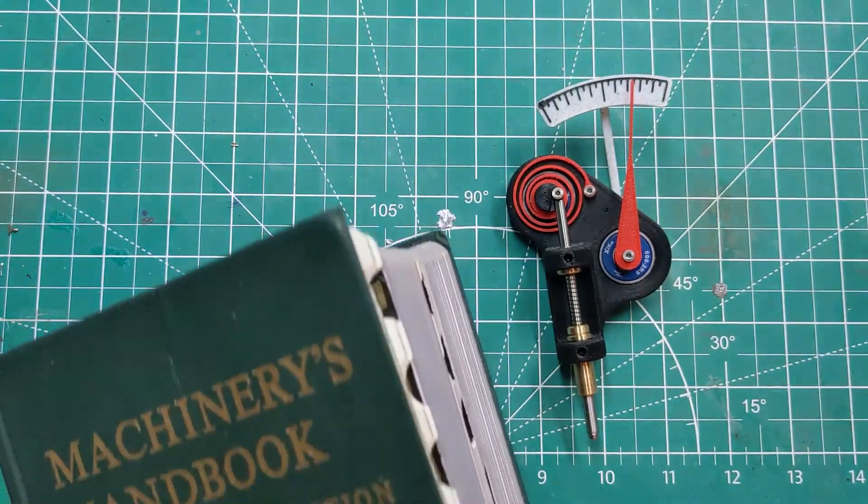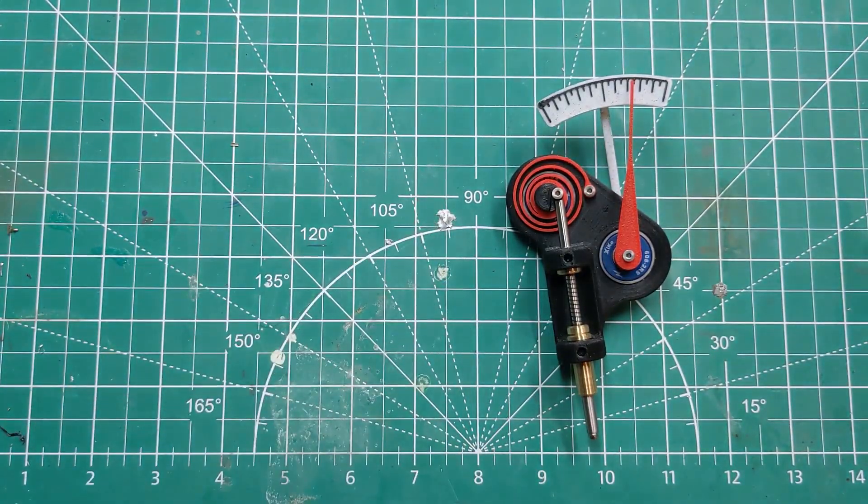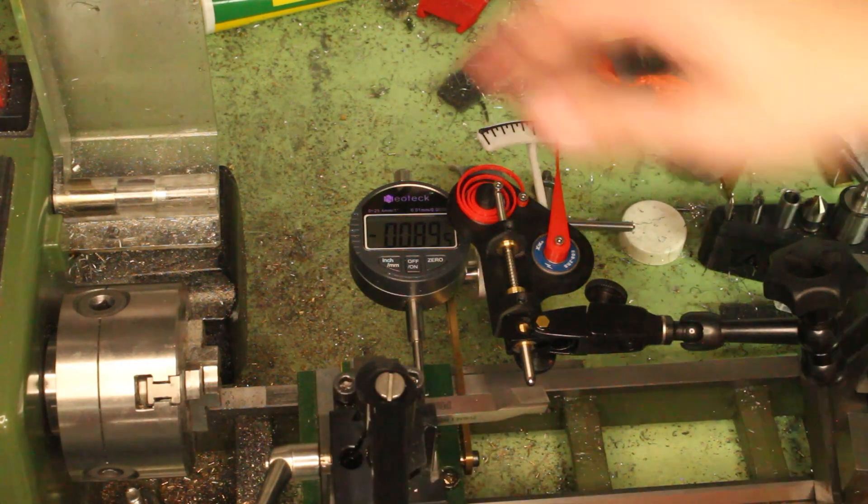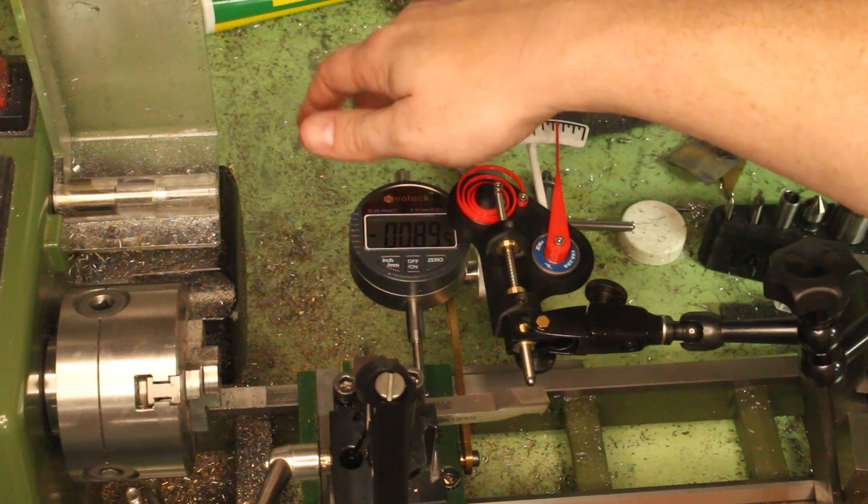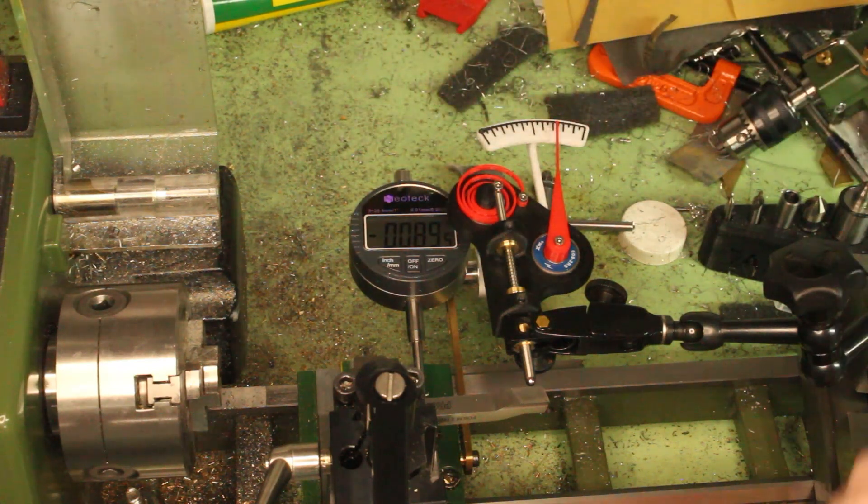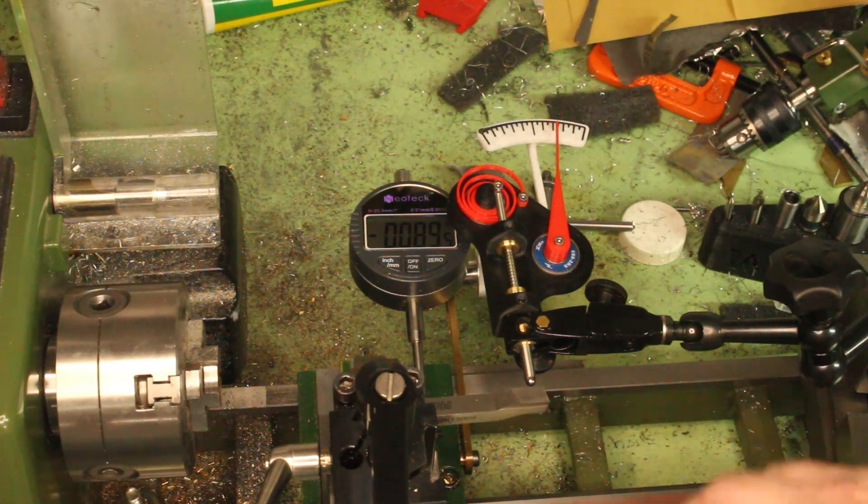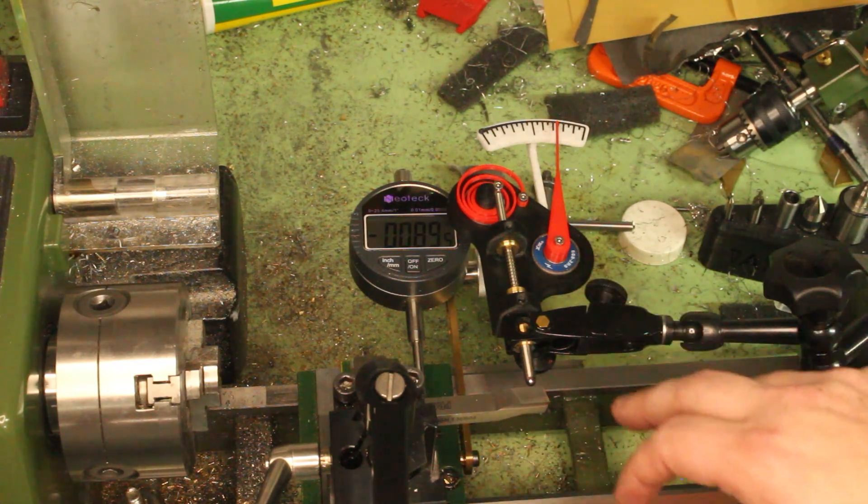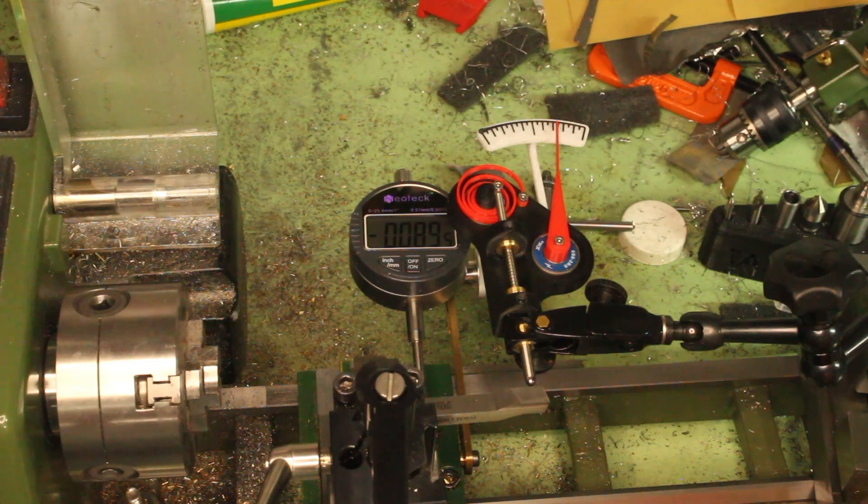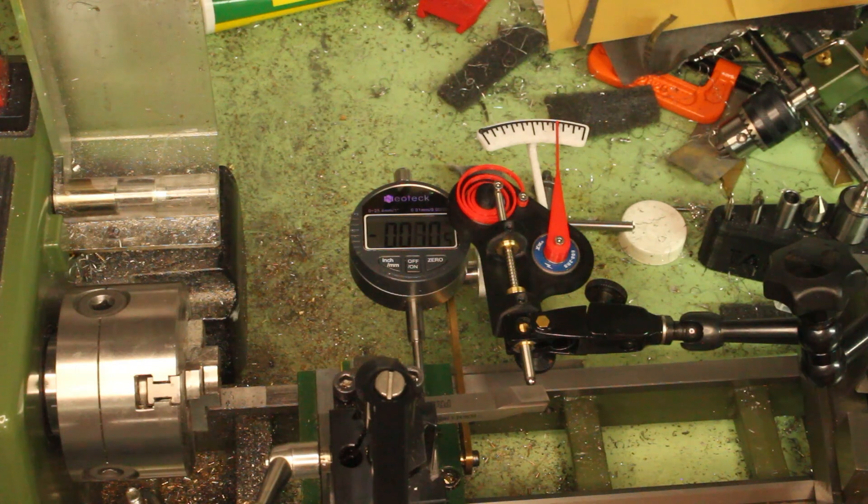Okay, so we're set up to test this using the lathe as a fixture. I've got my regular five tenths digital indicator here that we use as a DRO on the lathe against the cross slide, and then I've got my 3D printed version here just against a tool. We'll go ahead and just see how it works. So first we get the 3D printed one preloaded.